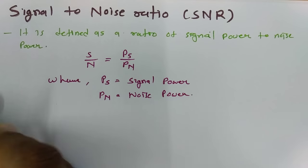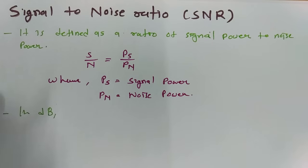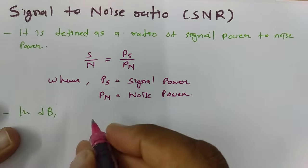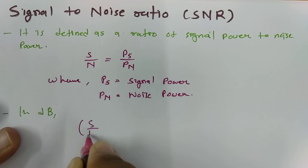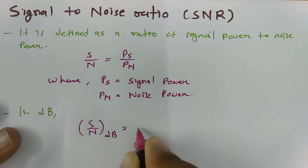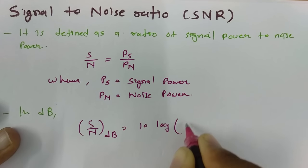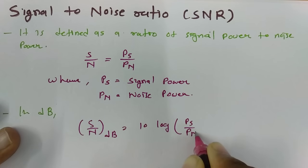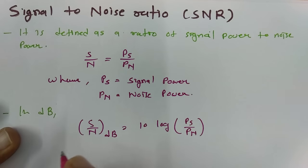When we calculate SNR in terms of dB, we need to take 10 log of that. So in terms of dB, SNR will be 10 log of PS by PN.